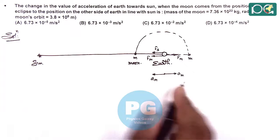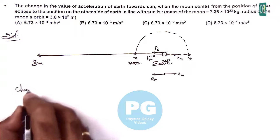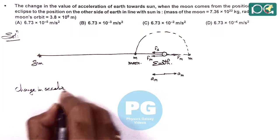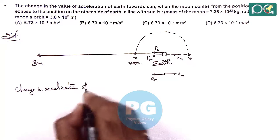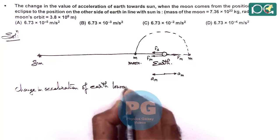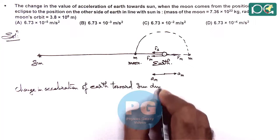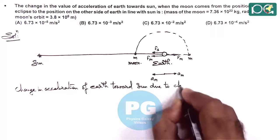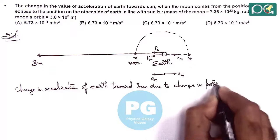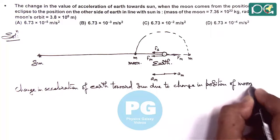So in this case we can directly write change in acceleration of earth towards sun due to change in position of moon is...